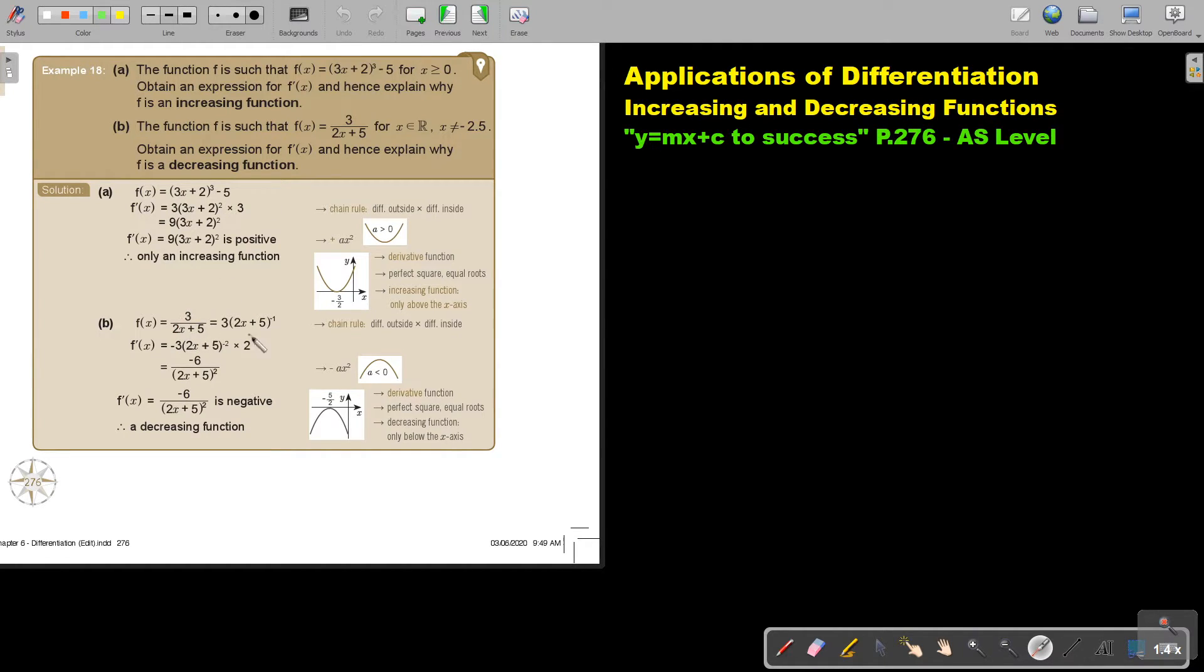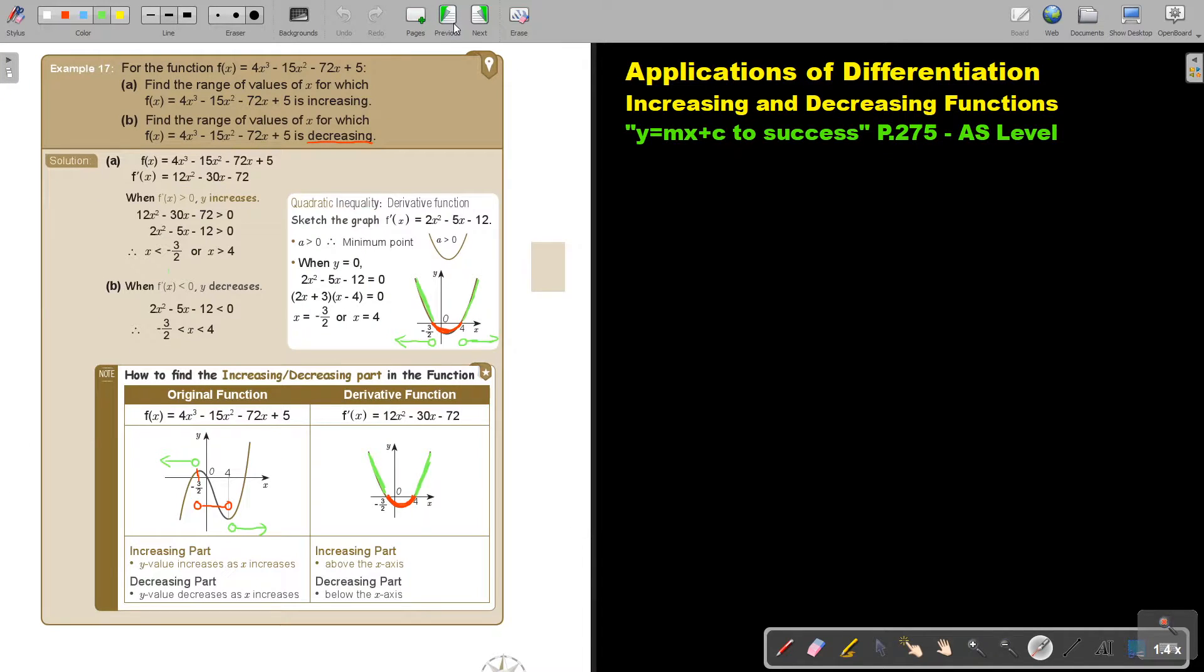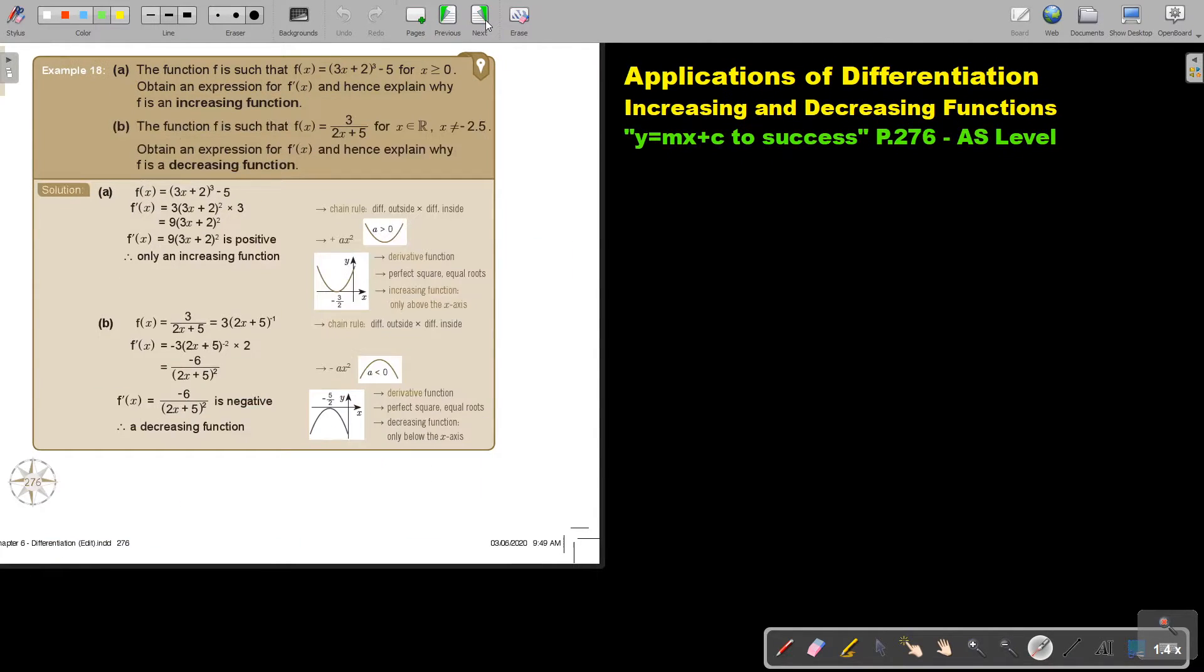Again it's the chain rule. So we bring up and let's use the short method now. We differentiate the outside and then multiply differentiate the inside and then we just bring it down. But now take note the a is now negative. So it indicates the graph will go like this and it's just cutting there. So this will be your graph. Now again it's just indicating that it's just below the x-axis. And this is the reason why therefore it's a decreasing function.